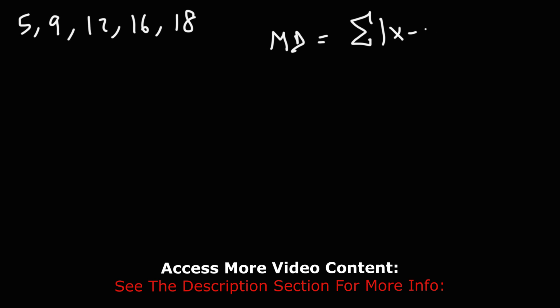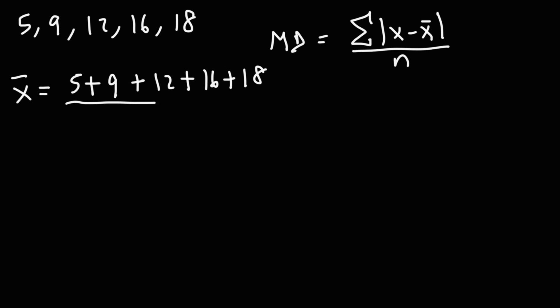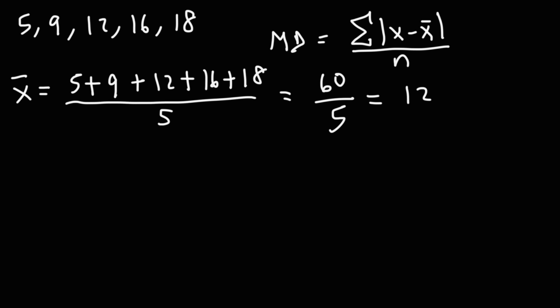Using the formula, we're going to take the sum of the absolute difference between each data point and the mean, and divide it by n. The first thing we need to do is calculate the mean. So let's take the sum of the five numbers and divide it by 5. 5 plus 9 plus 12 plus 16 plus 18 equals 60, and 60 divided by 5 is 12. So 12 is the arithmetic mean in this problem.